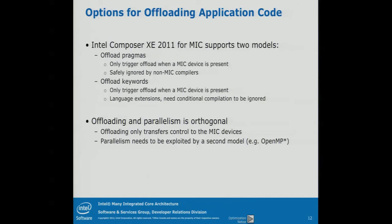If you recall James' slide about all the programming models we support for Xeon Phi, you can imagine that tying the offloading to each programming model would be a nightmare — you'd need an offloaded version for TBB, for CILK, for OpenMP, P-thread offloading, MPI offloading. So what we did is have one offload model that offloads whatever code you have, and then you need a second programming model to actually create the parallelism on the device.